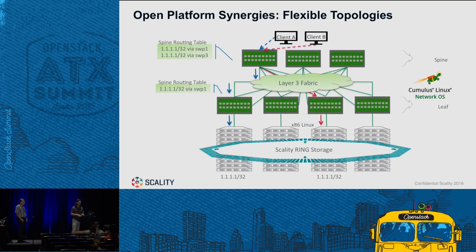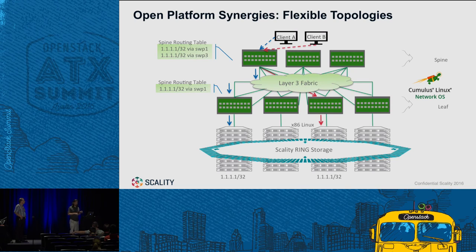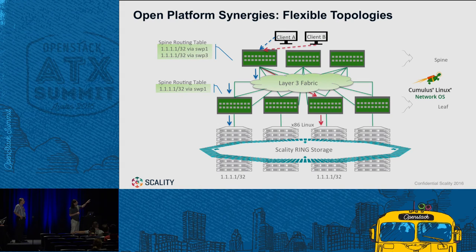We can help with that through automation tools. We've also implemented technologies that make this easier — rather than managing a huge number of IP addresses for all these little links, we give you the ability to assign one IP address to each switch and have that be the entire config. This makes it super easy to write a single config that you can blow out across all of the switches.